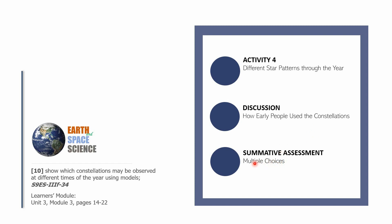If you want to follow through with your learner's module, you can open it at Unit 3, Module 3, pages 14 to 22. We are going to finish this quarter with the 10th learning competency: showing which constellations may be observed at different times of the year using models. Let's begin with the first part, activity number 4.